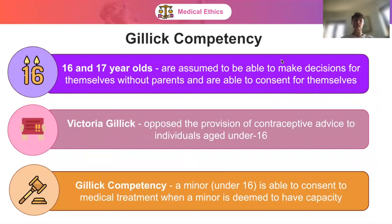This begins with Victoria Gillick, a woman who opposed the provision of contraceptive advice to individuals aged under 16. Her daughter had been offered contraceptive advice by a GP without the consultation of her parents, and she was 15 — a minor.